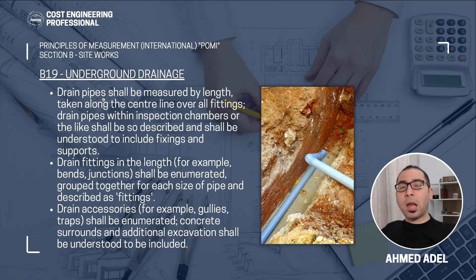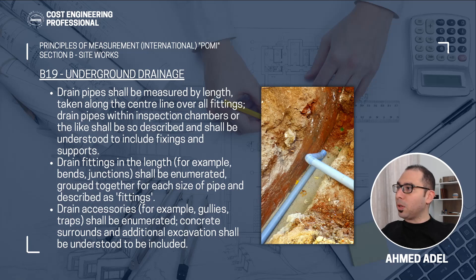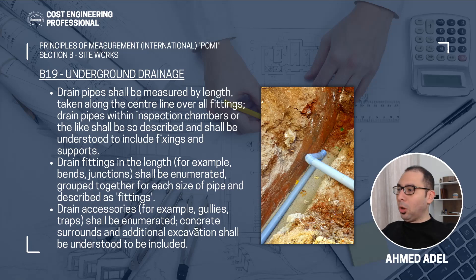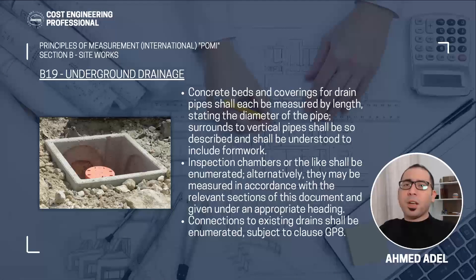To clarify: drain pipes shall be measured by length along the center line, and any drain pipes that come within inspection chambers shall be so described. Drain fittings such as bends and junctions shall be enumerated and grouped together by size — each size will have a separate item in the BOQ described as fittings. Drain accessories such as gully traps shall also be enumerated, and concrete surrounds and any additional excavation required shall be understood to be included in that drain accessories item. Concrete beds and coverings for drain pipes shall be measured by length, stating the diameter of the pipe.